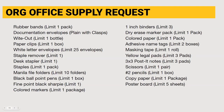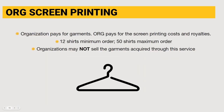ORG also fills office supply requests. RSOs can request items through our MU Engage form, and the limits are per semester. ORG also offers a screen printing service that is very beneficial to RSOs. The organization pays for the garments, and ORG pays for the screen printing costs and royalties. There is a 12-shirt minimum and 50-shirt maximum order limit, and recognized student organizations cannot sell the garments acquired through this service.